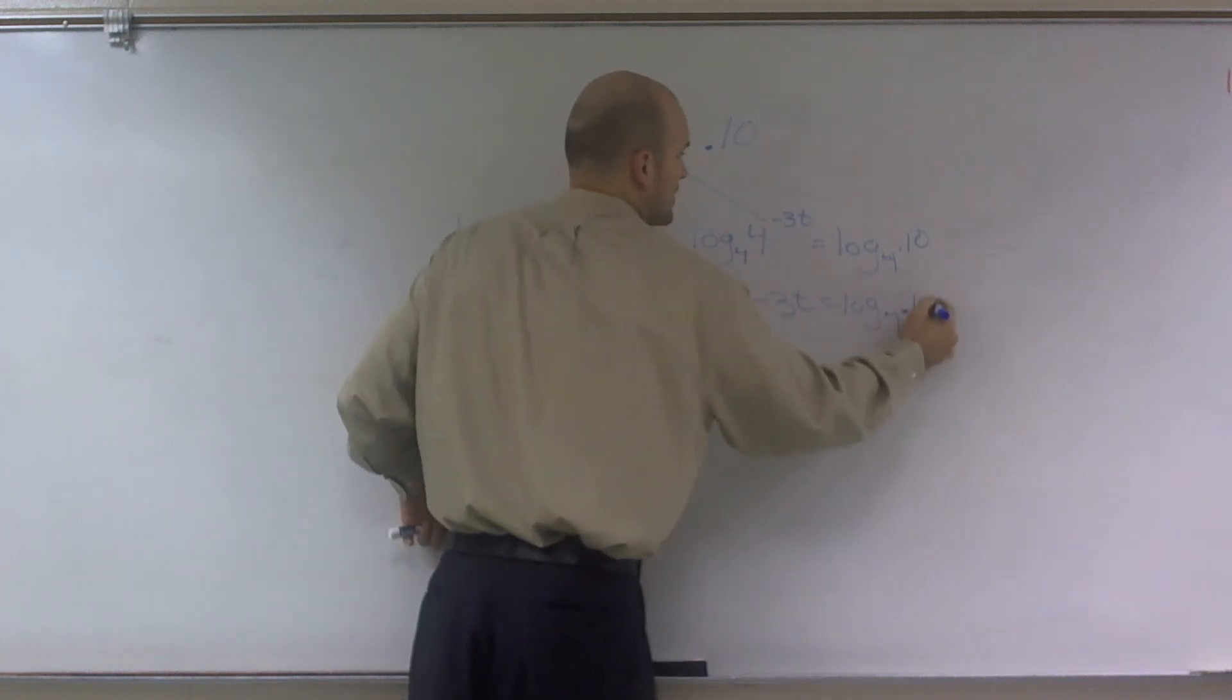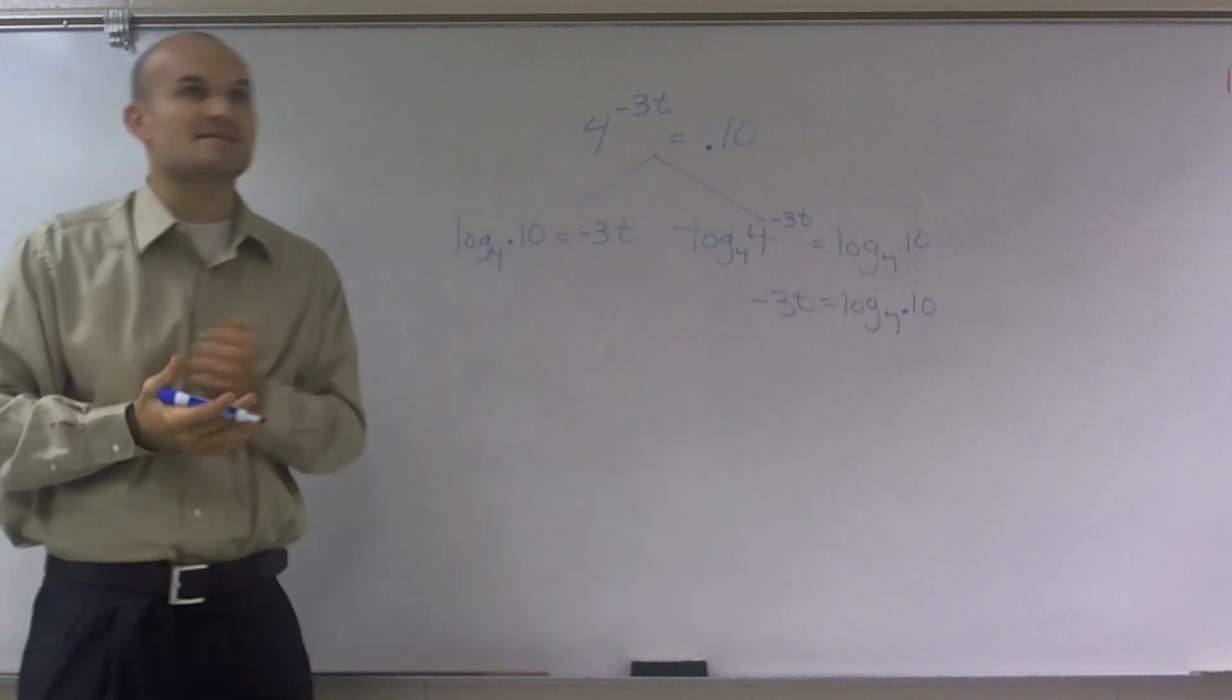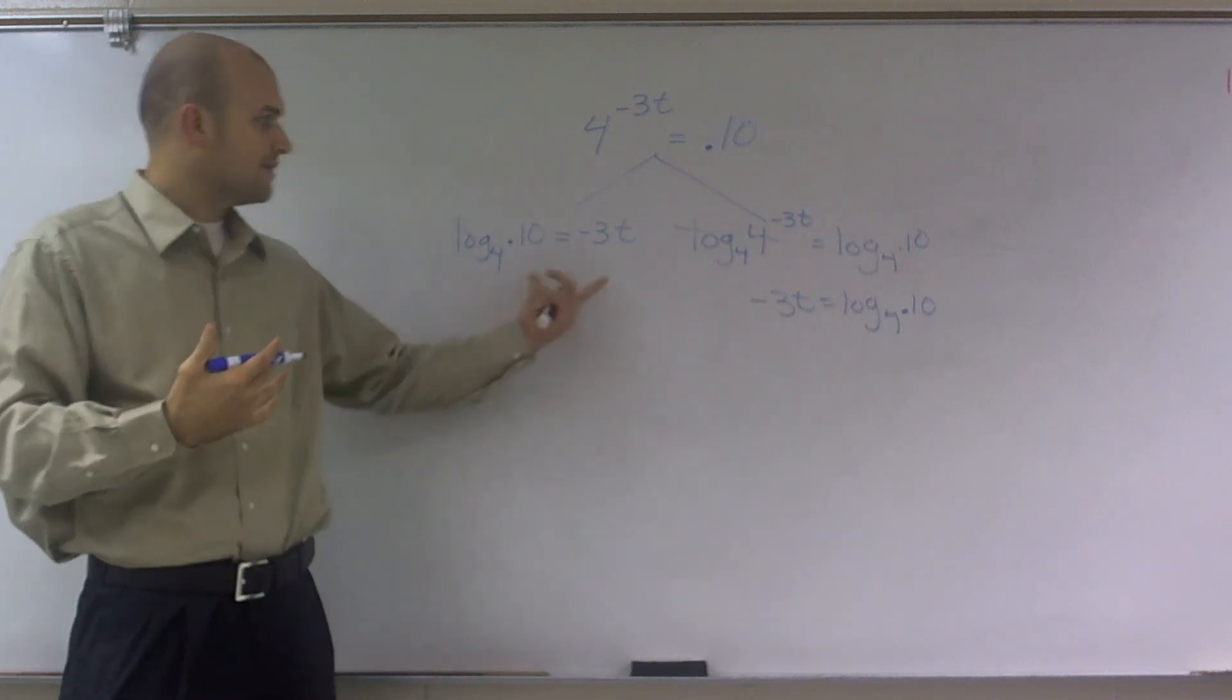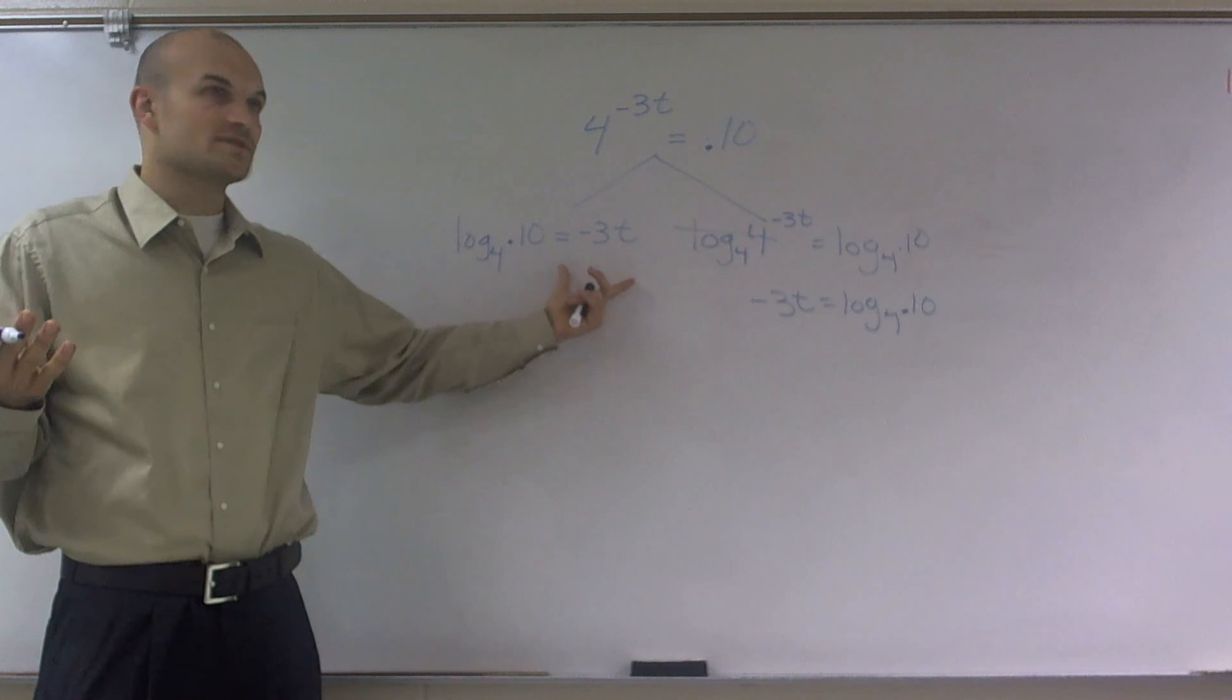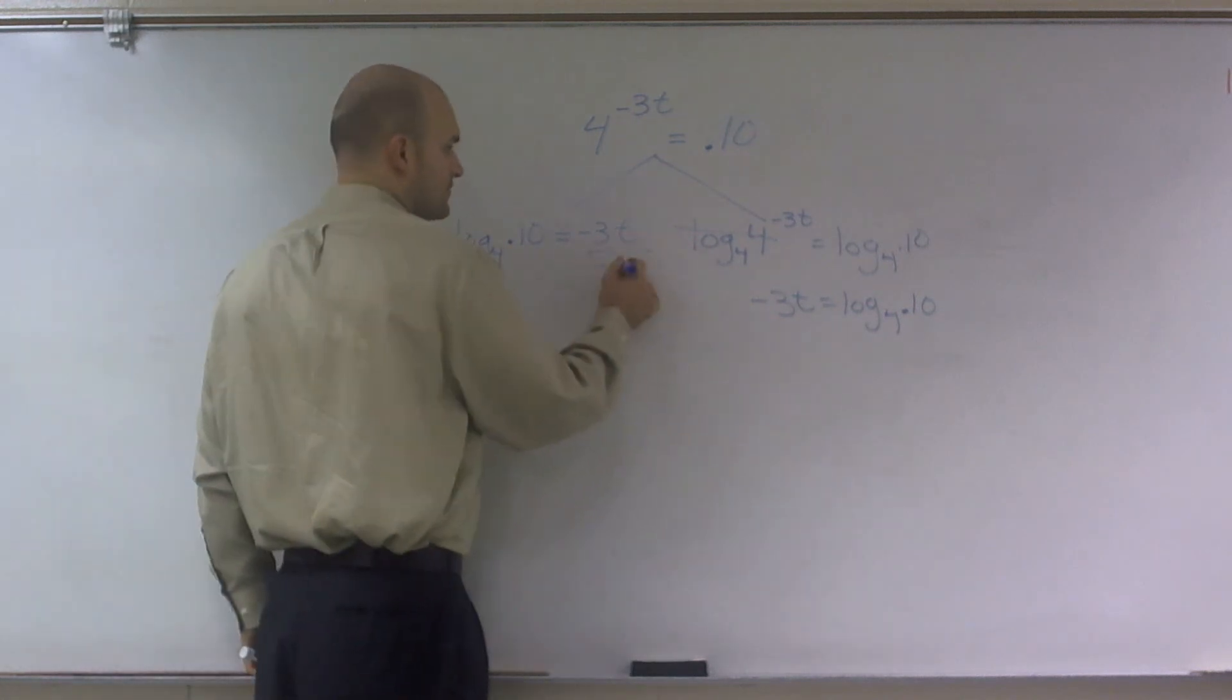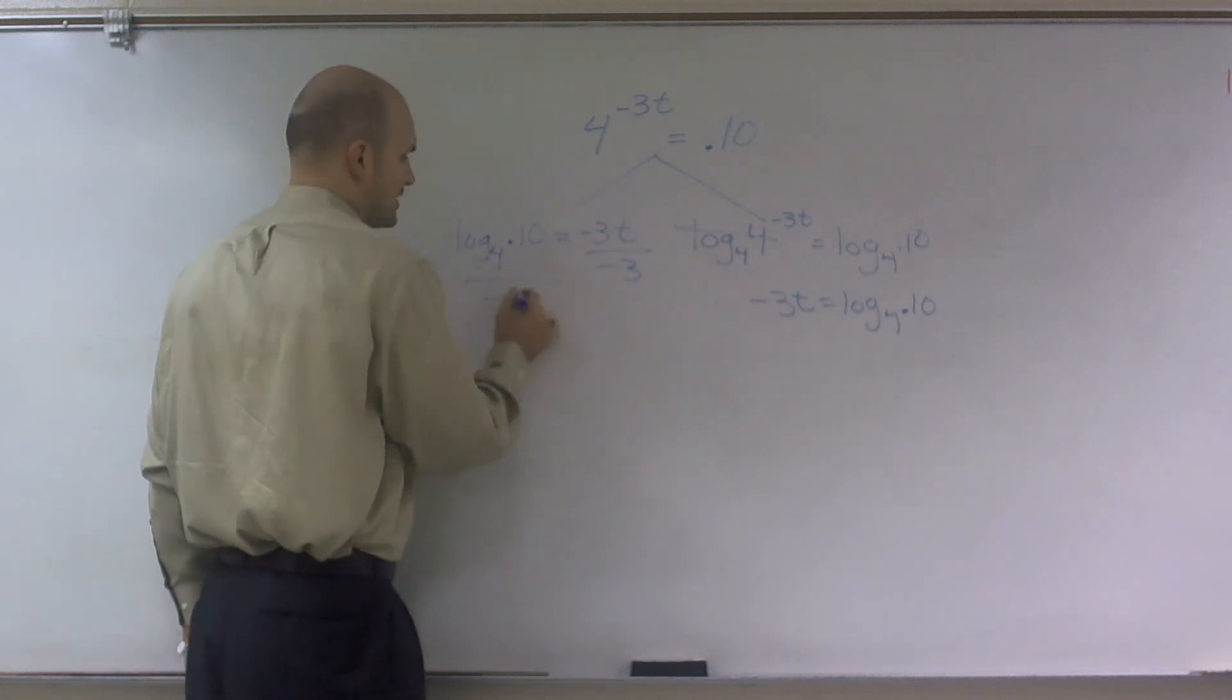It's the exact same way. So whatever kind of makes sense to you, whatever you guys can use, use it. Then from here, it's just simply solving for t. So I have to divide by negative 3.